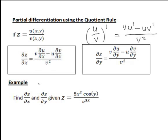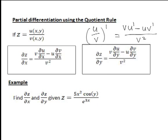When we apply this to partial derivatives for a function z of x and y, written as one function of x and y divided by another, the partial derivative of z with respect to x is v times the partial derivative of u with respect to x, minus u times the partial derivative of v with respect to x, all divided by v squared. Similarly, the partial derivative of z with respect to y is v times ∂u/∂y minus u times ∂v/∂y, divided by v squared.